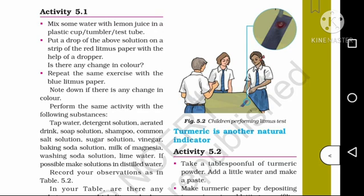The substances to test are: tap water, detergent solution, aerated drink, soap solution, shampoo, common salt solution, sugar solution, vinegar, baking soda solution, milk of magnesia, washing soda solution, and lime water. If possible, make solutions in distilled water. Record your observations in table 5.2.